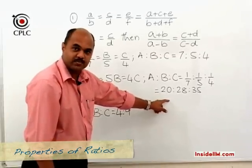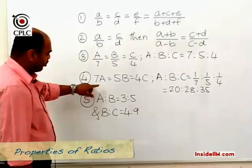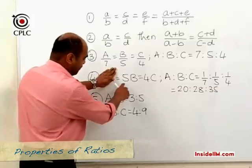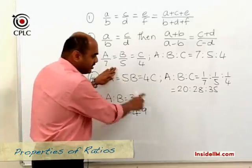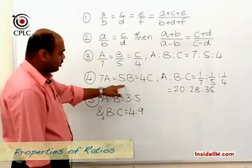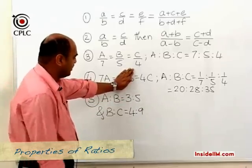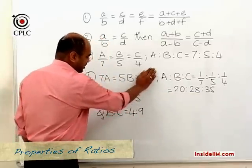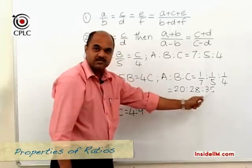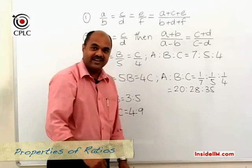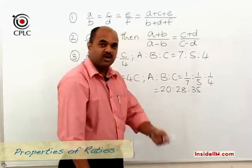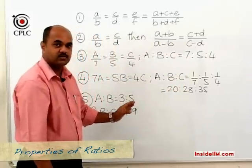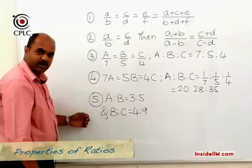There is another way of directly arriving at this answer: to find the value corresponding to A, cover 7A and multiply the other two numbers you see; that gives the value for A. To find B, cover the B term and multiply 7 and 4, giving the value for B. Similarly for C, cover that term and 7 times 5 gives 35. When using this method, the ratio may not be in the simplest form, so cancel any common factors to express it in the least possible form.